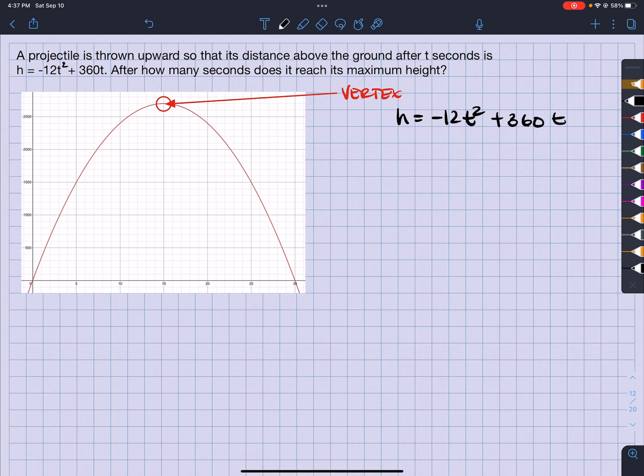Well, that's easy. First, because this is in standard form, I will have to find the axis of symmetry. I have to find the axis of symmetry, and that's going to be t equals negative b over 2a.